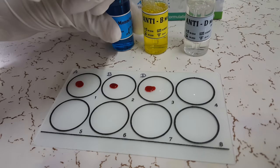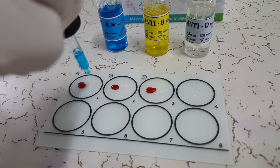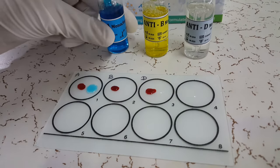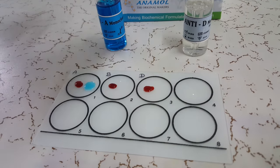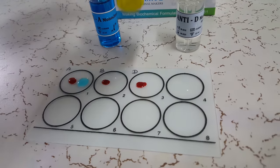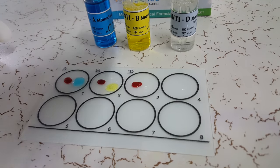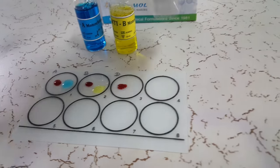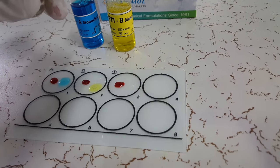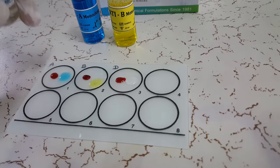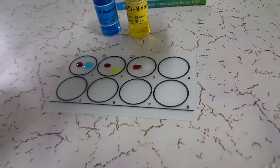Next, place one drop of monoclonal anti-A antibody on the first circle. Place one drop of monoclonal anti-B antibody on the second circle. Next, place one drop of monoclonal anti-D antibody on the third circle.